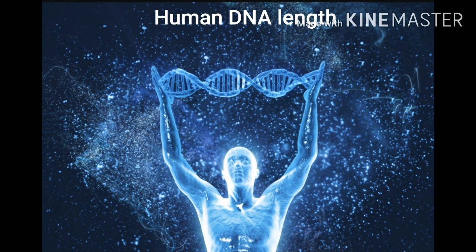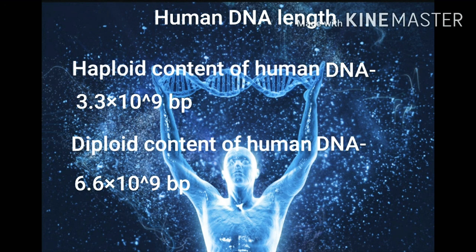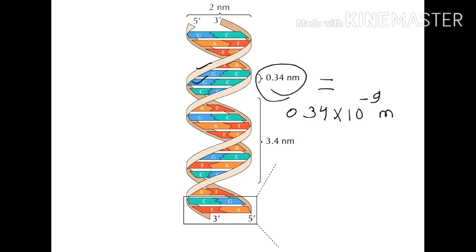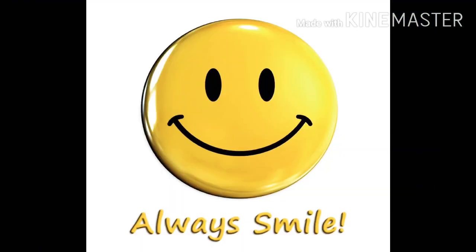The haploid content of human DNA is about 3.3 × 10⁹ base pairs, meaning the 23 chromosomes combined have 3.3 × 10⁹ base pairs. The diploid content — the 46 chromosomes present in a cell — will be 6.6 × 10⁹ base pairs. Since the distance between two base pairs in DNA is 0.34 nanometers, the total length of human DNA in one cell is 2.3 meters.